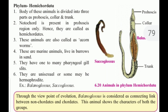Phylum Hemichordata: the body of these animals is divided into three parts — proboscis, collar, and trunk. Notochord is present in the proboscis region only, hence they are known as hemichordates.